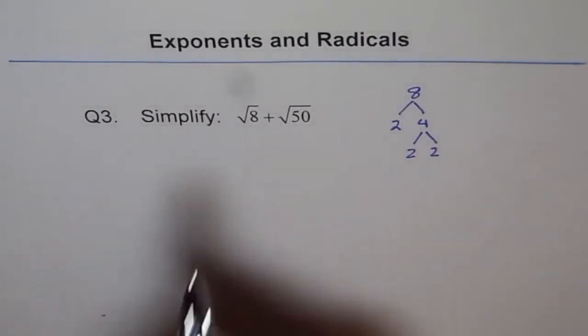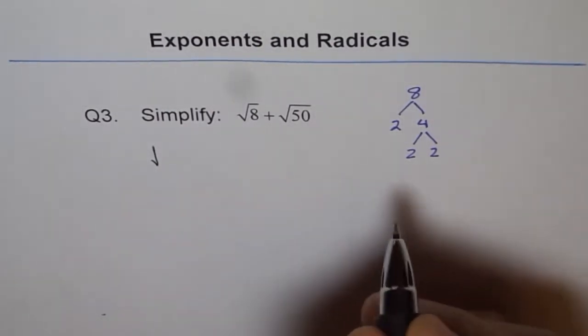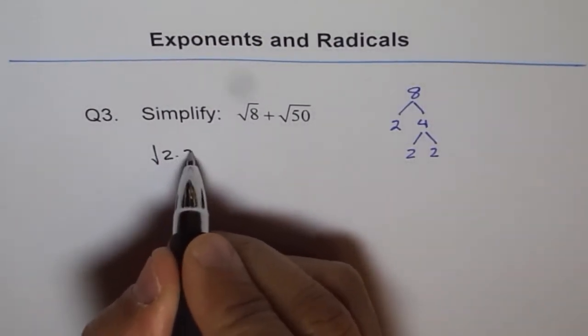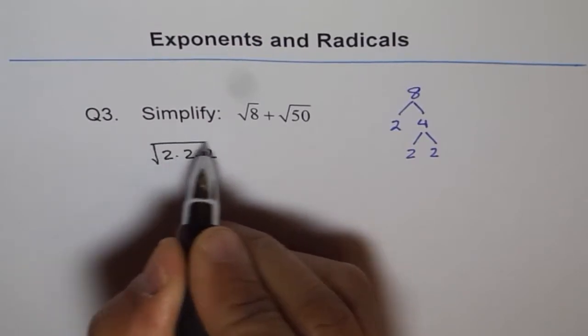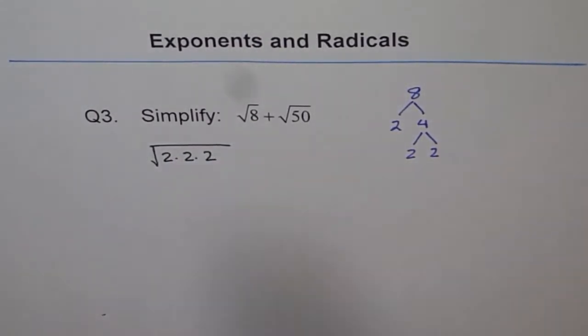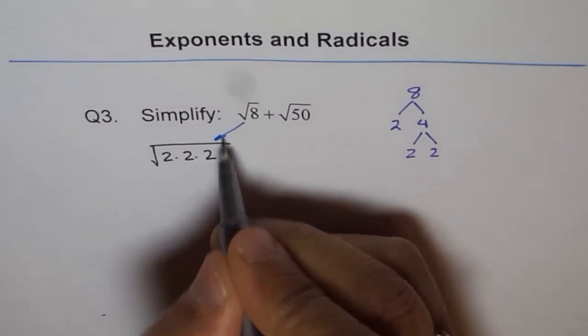So instead of square root of 8, I can write this as square root of 2 times 2 times 2. So that is square root of 8. So this is what I am saying is square root of 8.